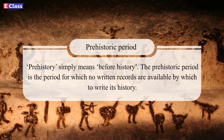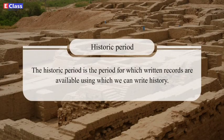The first is the Prehistoric Period. Prehistory simply means before history. The prehistoric period is the period for which no written records are available to write its history. The second is the Historic Period, which is the period for which written records are available and using which we can write history.